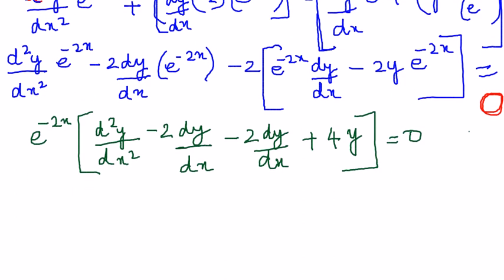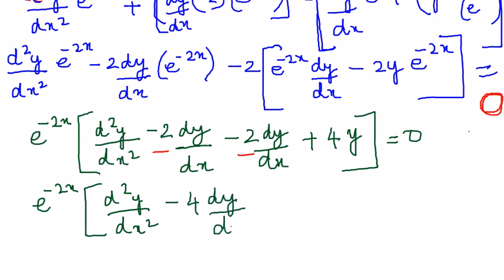This is e power minus 2x d squared y by dx squared. Now can I add this term and this term? Yes, I can. So it becomes minus 4 dy by dx plus 4y equals 0.